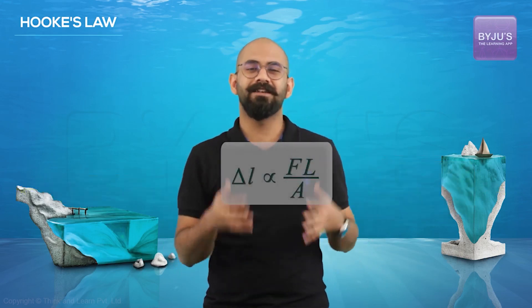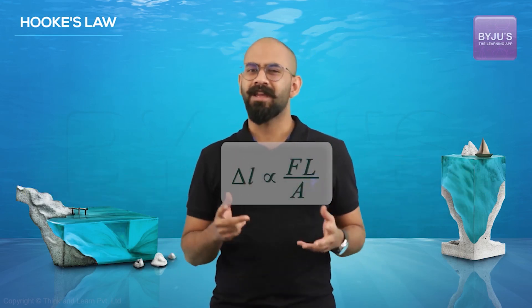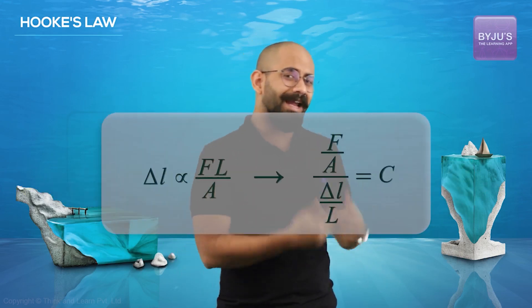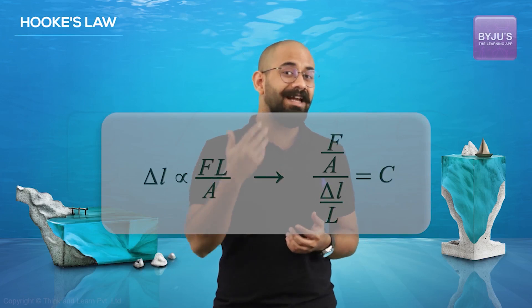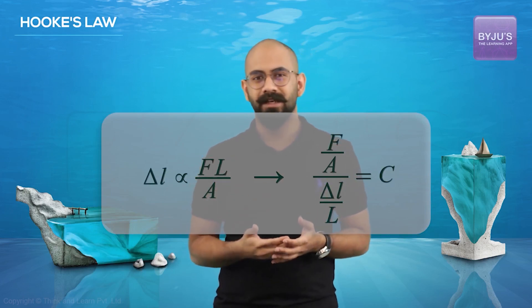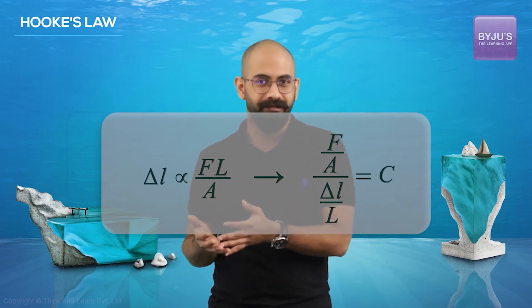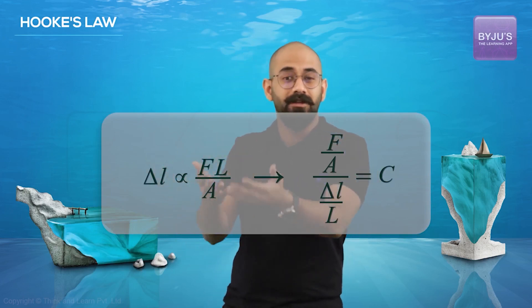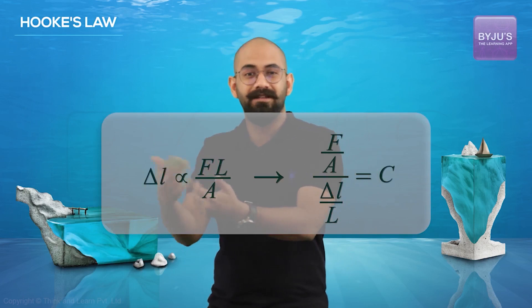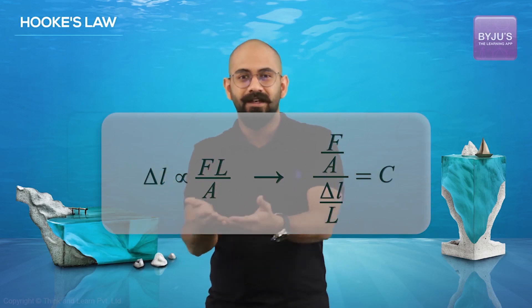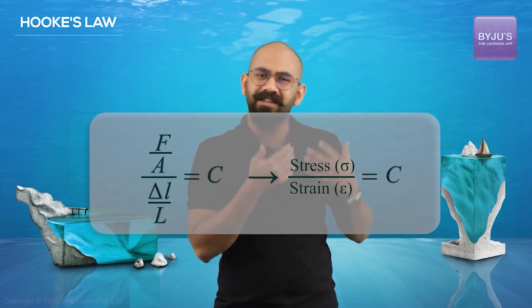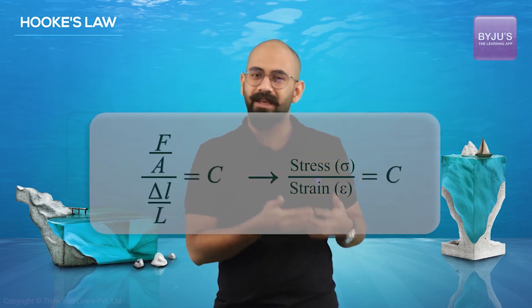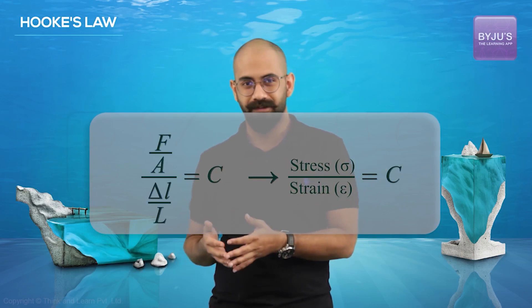So delta L is directly proportional to F, directly proportional to L, but inversely proportional to A. If I rearrange this, I get that F/A divided by delta L/L is a constant — and from the quantities I just defined, we get that stress divided by strain is a constant.